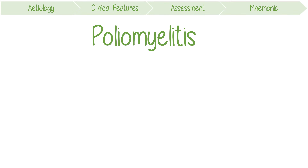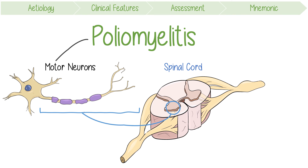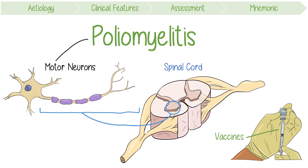Polio or poliomyelitis is an acute infectious disease in which motor neurons coming out of the spinal cord are targeted by poliovirus. Acute flaccid paralysis is a hallmark of the major illness and has no specific treatment. Although it was once one of the most feared diseases worldwide, eradication initiatives using vaccines have been extremely successful. At the end of this video, I'll go through my mnemonic to help you remember the main clinical features of poliovirus using Papa Polio.